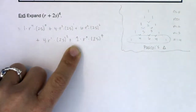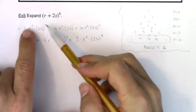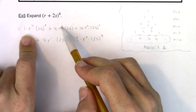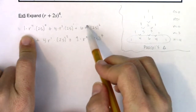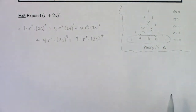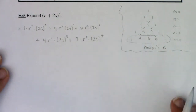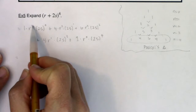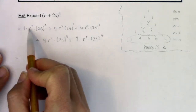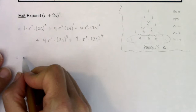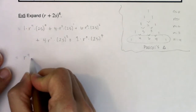Before simplifying, I'll do a quick check: do all exponents add to four? Four plus zero is four, three plus one is four, two plus two is four, one plus three is four, zero plus four is four. Now cleaning up: r to the fourth times one is r to the fourth, and anything to the zero is one, so the first term is just r to the fourth.